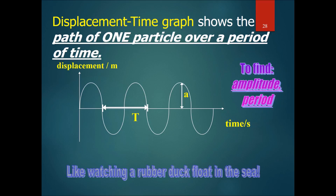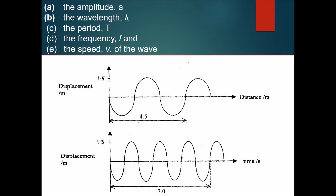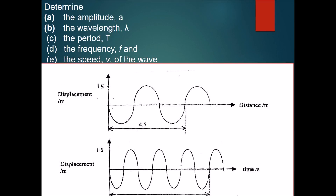It's like watching a rubber duck float in the sea. Now let's try some practice questions. The figures below show the displacement-distance graph and the displacement-time graph of the same wave traveling along a length of rope. Pause the video now to solve the problems, then press play for the answers. The first thing we need to find is the amplitude.